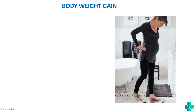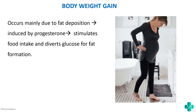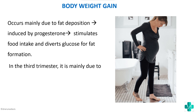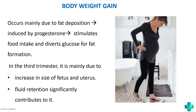The first change that can occur during pregnancy is a change in body weight — there will be an increase in weight. This occurs mainly due to fat deposition, which is induced by progesterone. Progesterone stimulates food intake and diverts glucose for fat formation, which is essential because the growing fetus needs glucose. In the third trimester, weight gain is mainly due to an increase in the size of the fetus and uterus, and fluid retention also contributes.